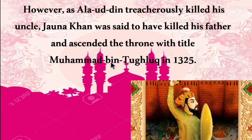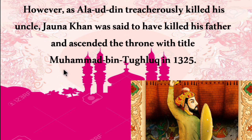Just as Ala Uddin had treacherously killed his uncle Jalal Uddin, Jauhna Khan was said to have killed his father Giyas Uddin and ascended the throne with the title Muhammad bin Tughlaq in 1325 AD.